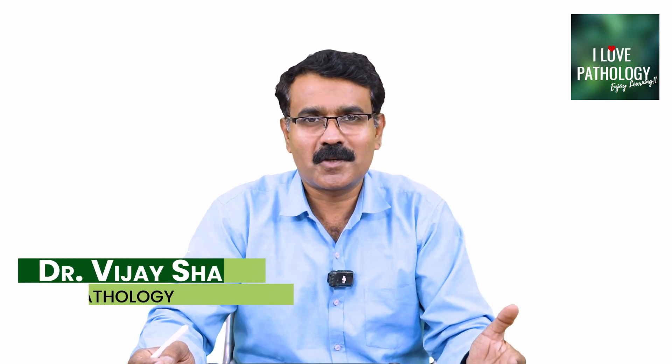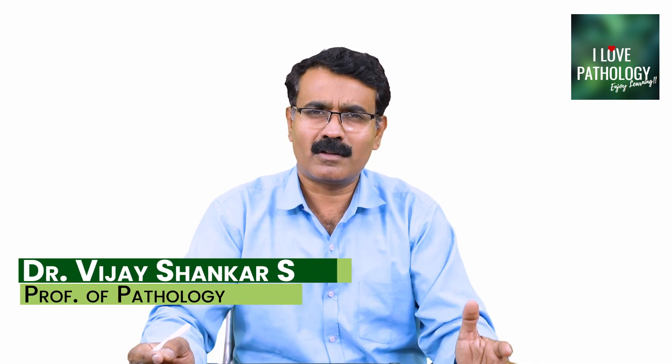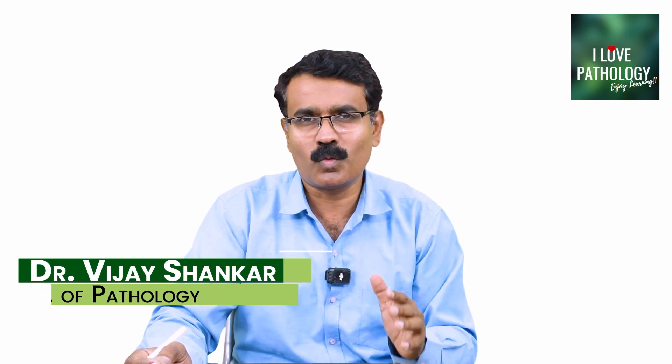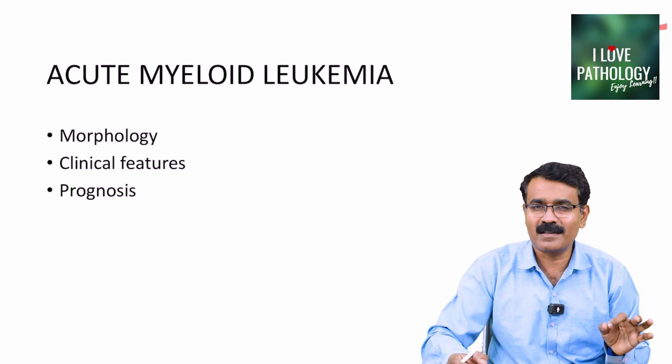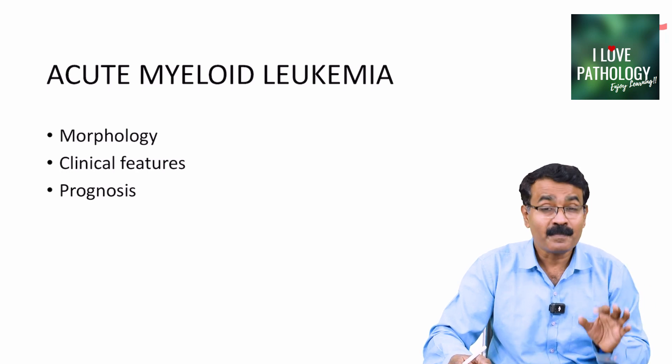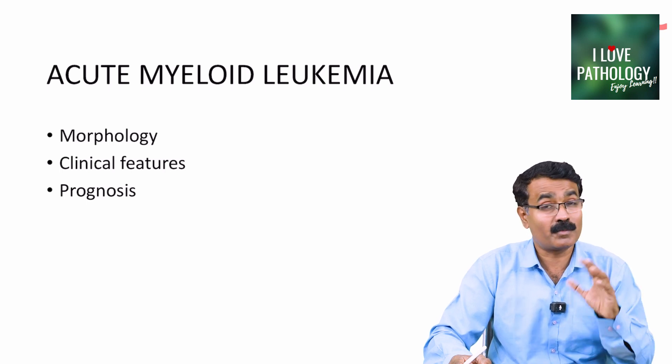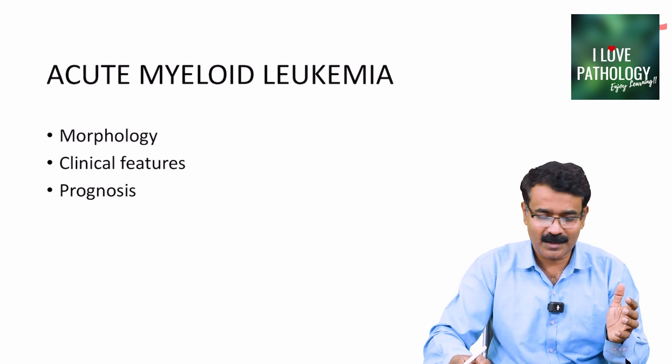Hi everyone. Welcome back to this short tutorial from Pathology Made Simple at ilopathology.com. This is in continuation with the series on white blood cell neoplasms. In my earlier two sessions, we discussed how white blood cell neoplasms are classified, and in my previous session I talked about the etiopathogenesis and classification of acute myeloid leukemia. In this session, let us learn the morphological features, clinical features, and prognosis of acute myeloid leukemia.